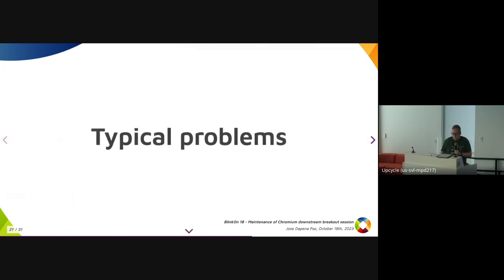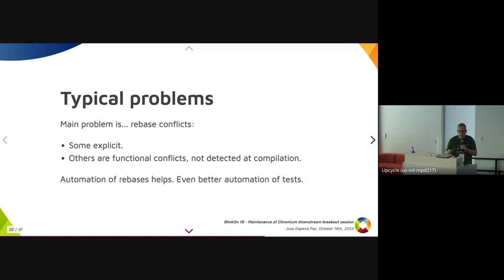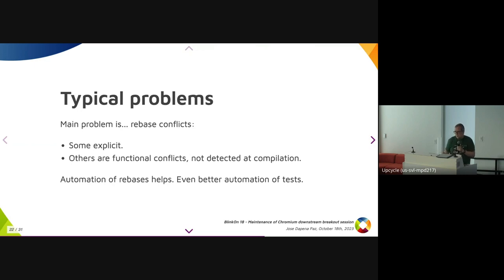Some typical problems: the biggest is still merge conflicts. When I talk about merge conflicts here, I'm not only talking about typical git merge conflicts — it's also about functional conflicts. You merge, apparently nothing happens, everything looks right, you build and it still looks right, and then you run and everything is broken. This is something that automation helps with, but it's still a problem for downstreams.